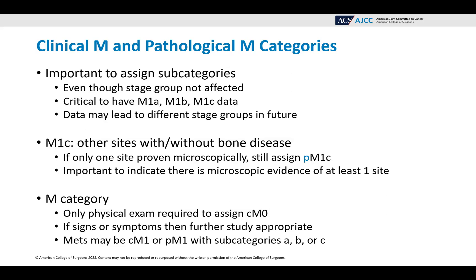For the M category, only a physical exam is required to assign CM0. If there are signs or symptoms, then further study would be appropriate. Mets may be CM1 or PM1 with subcategories of A, B, or C. The CM1 or PM1 is based on the method of assessment.